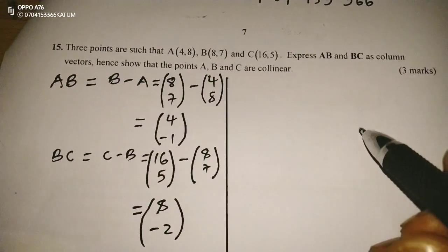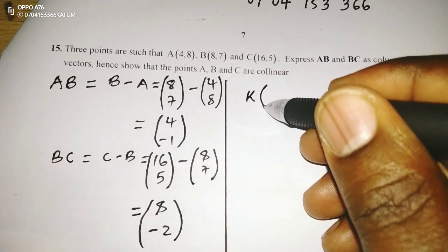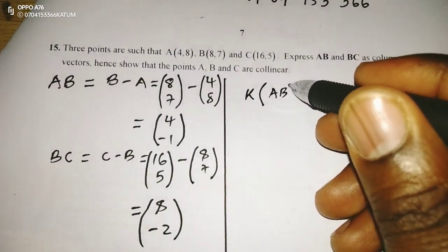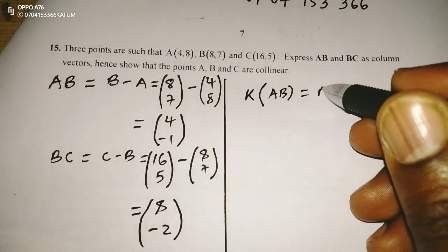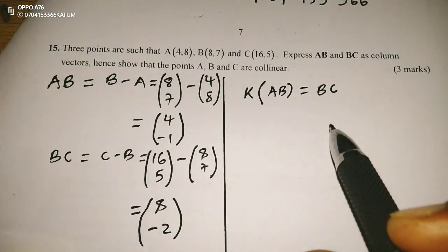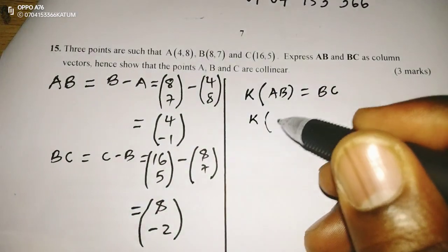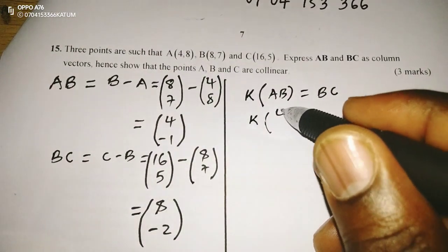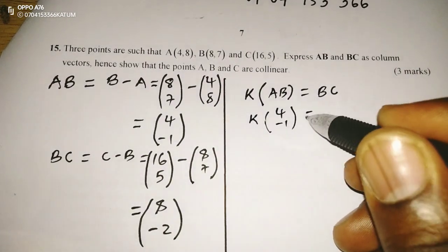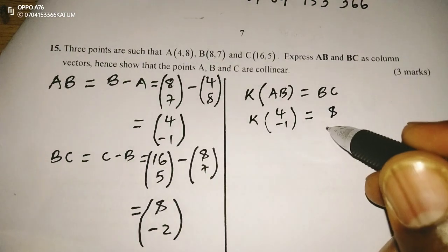If we say that a certain constant k multiplies AB to give us vector BC, then we can confirm whether there is a common scalar multiple between the two. We will say k times AB, which is (4, -1), gives us BC, which is (8, -2).